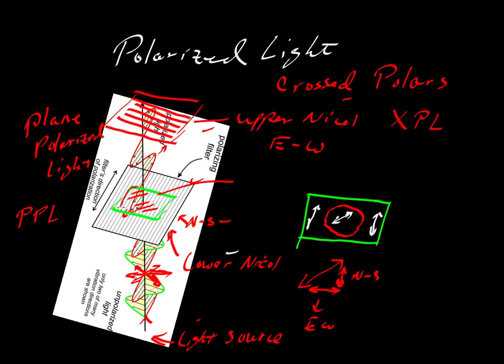But when we put a mineral here, we place a mineral that takes that north-south light and bends it to some angle. Now there will be an east-west component that will pass through that light, through that upper filter, and that's what we would refer to as the cross-polar's view of that mineral.